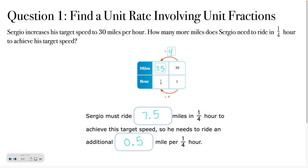For this problem, hopefully you said: in order to get the target speed of 30 and find how many miles he has to bike in a quarter of an hour, you would divide by four. So 30 divided by four is 7.5. That means Sergio must ride 7.5 miles in a quarter of an hour to achieve his target speed, which means he needs to ride an additional half mile per quarter hour. If you have questions, please reach out — I'm happy to help.